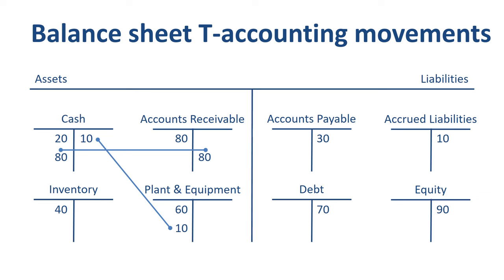The third transaction is the delivery of new inventory to our warehouse. We purchase new inventory, and our supplier sends us an invoice that we have to pay later. This is recorded as a debit to inventory and a credit to accounts payable. Our inventory asset increases, and our accounts payable liability goes up by the same amount.